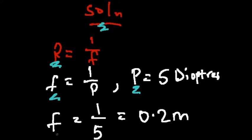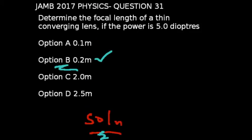We simply have a focal length, which is F, to be 1 over 5, and that will give us 0.2 meters. This corresponds to option B.